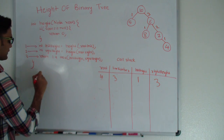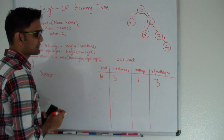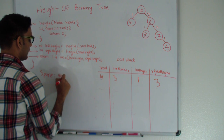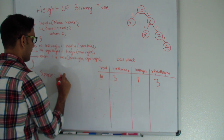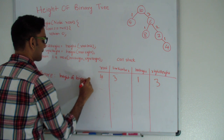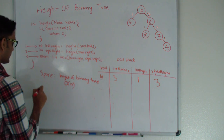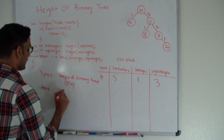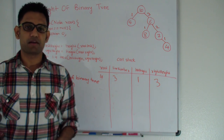The space complexity for this example will depend on how big the call stack will be. The space complexity will be the height of the binary tree, which in the worst case can be O(n). The time complexity will be O(n) because we are visiting all the nodes in this binary tree.